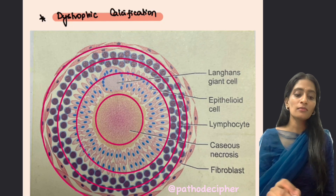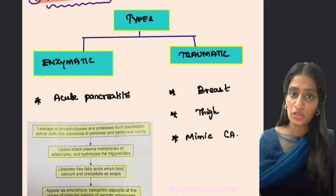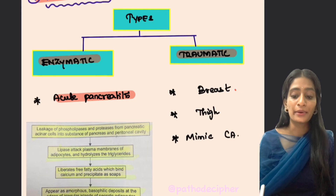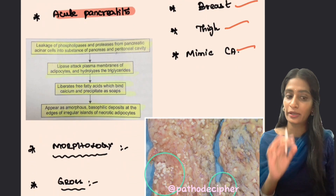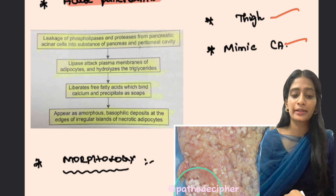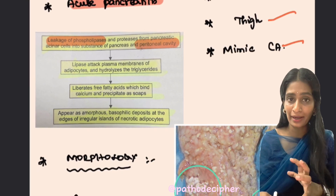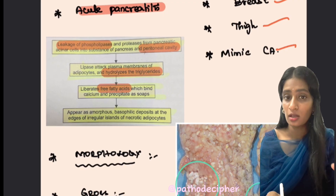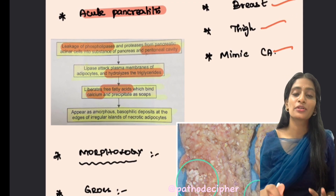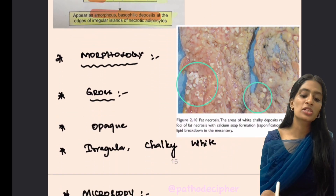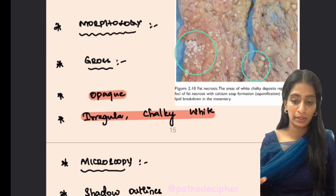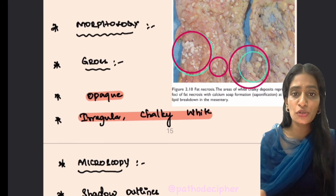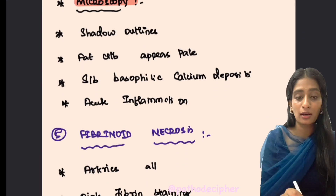Fat necrosis is divided into enzymatic and traumatic types. The classic example of enzymatic fat necrosis is acute pancreatitis; traumatic fat necrosis occurs in areas with bulk fat tissue like breast and thigh, where it can mimic carcinoma radiologically. In acute pancreatitis, phospholipases leak into the peritoneal cavity from the pancreas, causing hydrolysis of triglycerides, liberating free fatty acids, which combine with calcium to form dystrophic calcification. Grossly it appears as opaque, irregular, chalky white deposits.